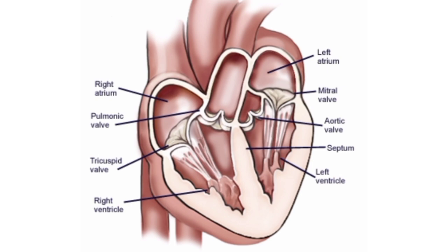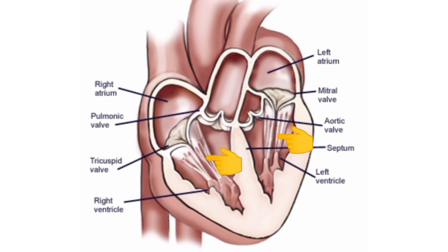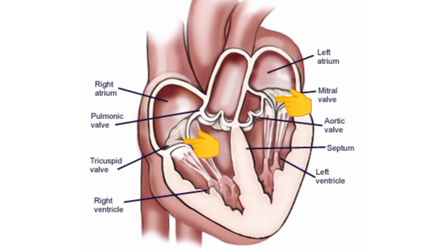The left atrioventricular valve is known as the mitral valve or the bicuspid valve, formed by two valvular cusps or flaps. The right atrioventricular valve is known as the tricuspid valve and is formed by three cusps. The brim of the atrioventricular valves is attached to the atrioventricular ring. The cusps of the valves are attached to the papillary muscles by means of the chordae tendineae. The papillary muscles arise from the inner surface of the ventricles and play an important role in closure of the cusps and in preventing backflow of blood from the ventricles to the atria during ventricular contraction. Atrioventricular valves open only towards the ventricles and prevent backflow of blood into the atria.